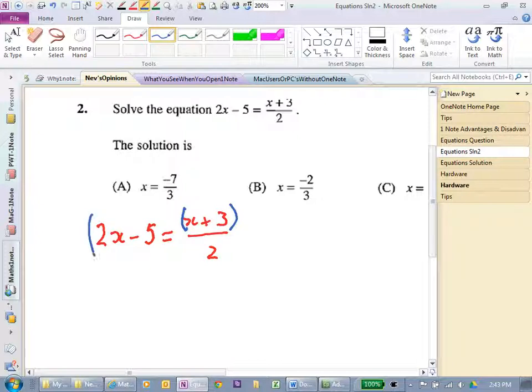Now, I'm going to multiply both sides by 2, but of course, it's really good if I put some brackets in. So, I'm going to multiply that side by 2 and I'm going to multiply this side by 2.